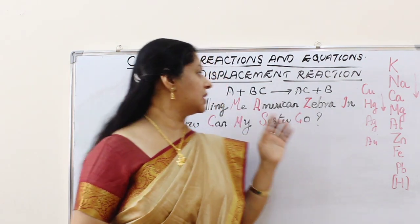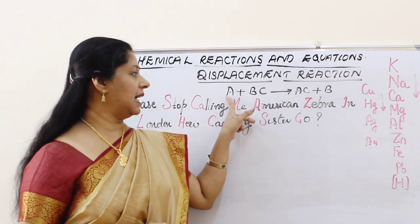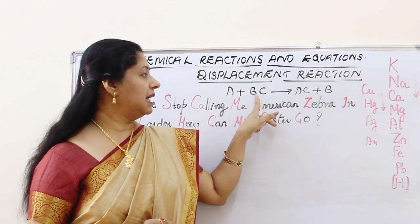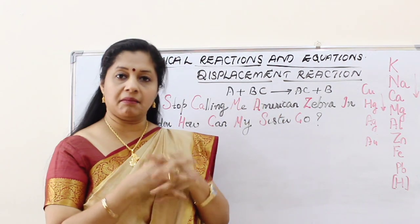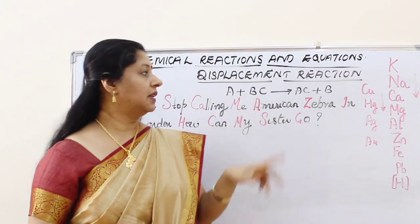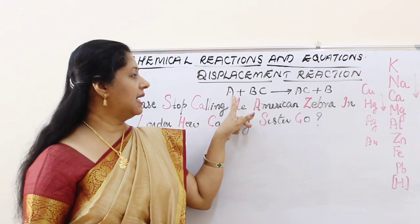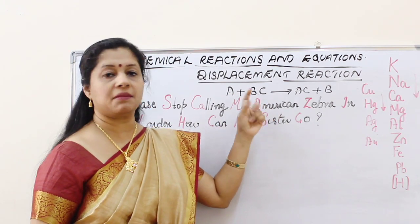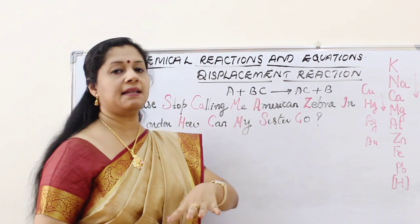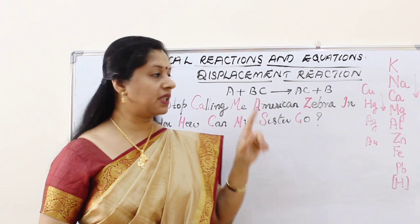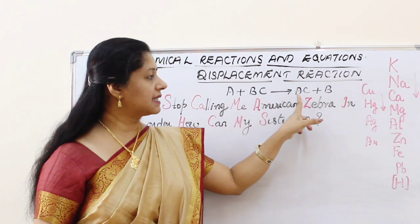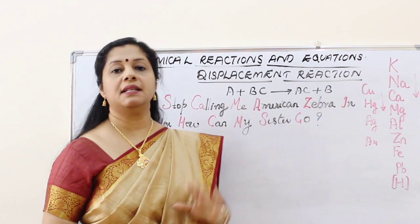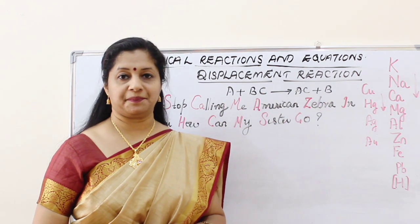We will see a general equation. A is an element. B and C are in compound form, but A is coming and displacing B — taking B's position with C — and B is left out.